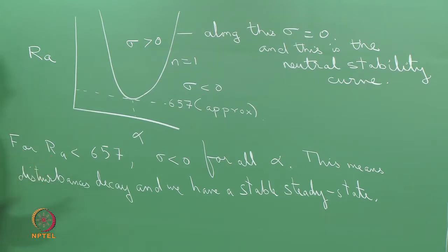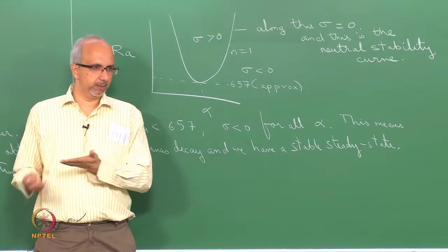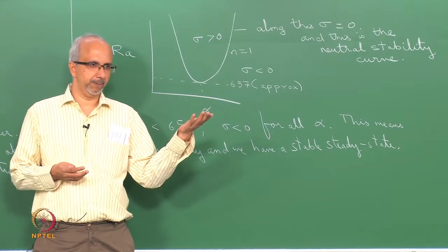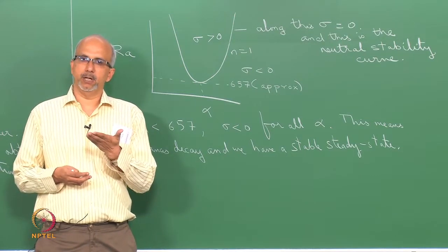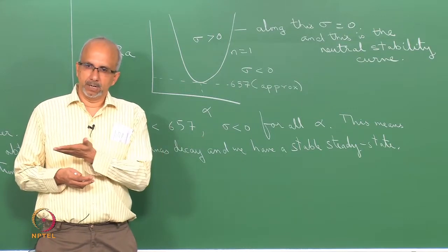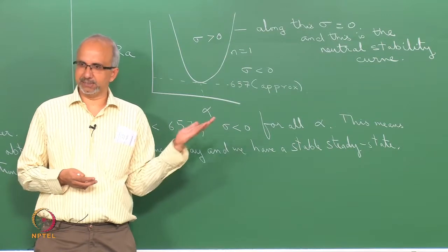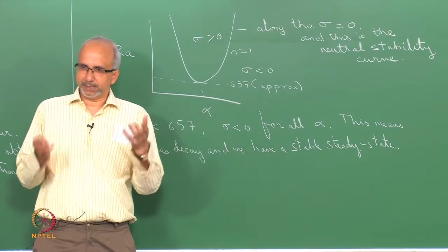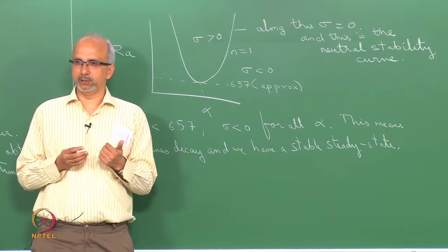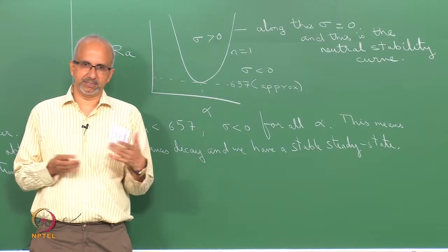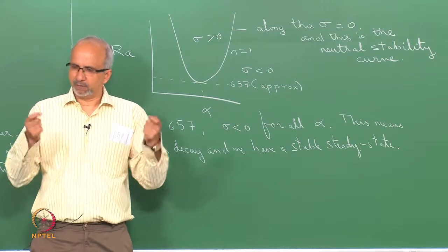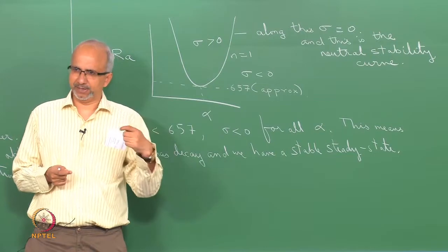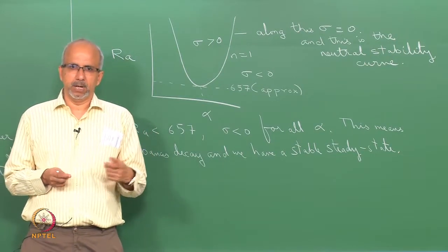This disturbance is going to be some kind of a function. For example, the disturbance could be a deviation of the lower plate temperature from T₀. We assumed the lower plate is uniformly at T₀, but there can be some deviation — experimentally you cannot get exactly 80°C; it could be 80.1 somewhere, or 79.9 somewhere else.